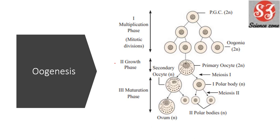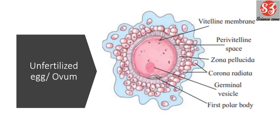Next is oogenesis. Just like spermatogenesis, oogenesis is also a diagram that will come in long answer questions. The long answer question can be 'explain the procedure of oogenesis,' and drawing this diagram is important alongside your answer. Therefore spermatogenesis and oogenesis are both very important. Next is unfertilized egg or ovum — it looks somewhat similar to the Graafian follicle diagram, but don't get confused. This is the unfertilized egg or ovum.